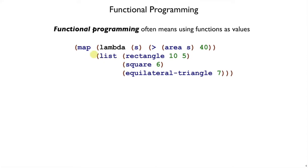Using a function as a value means calling map and providing a function that we make up right there. So we could call map on just area, because area is a value. Or we can make this lambda that takes an argument S, passes S to area, and checks whether the result is greater than 40.